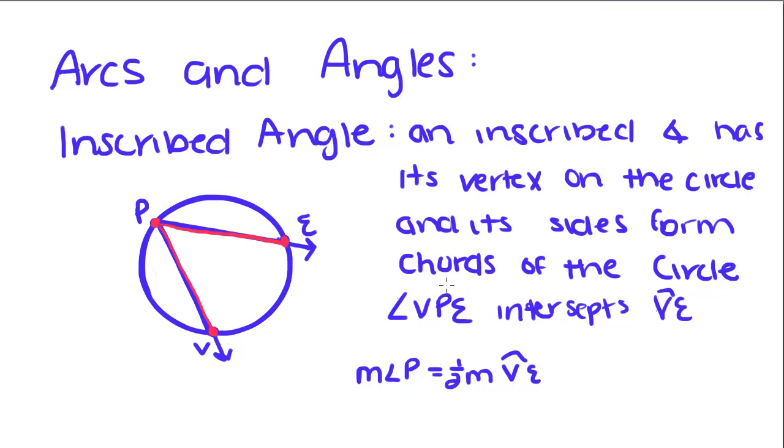Angle VPE intercepts VE, this arc right here, such that the measure of this angle is half the measure of this arc. If we know that the measure of angle VPE is 40 degrees, the length of arc VE has to equal 80 degrees, because this is twice the length of this, or this is one half the length of this.